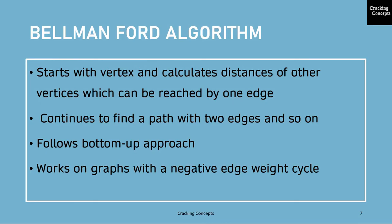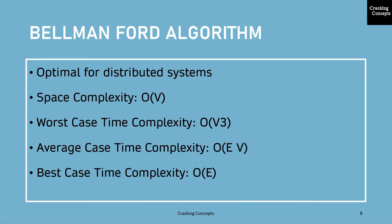It starts with a starting vertex and calculates the distance of other vertices that can be reached by one edge. It then continues to find a path with two edges and so on. It follows a bottom-up approach. This algorithm also works on graphs with a negative edge-weight cycle, that is a cycle of edges with weights that sum to a negative number.